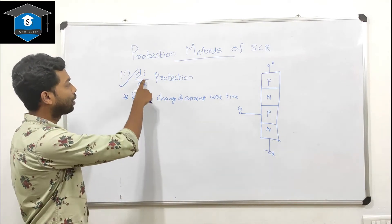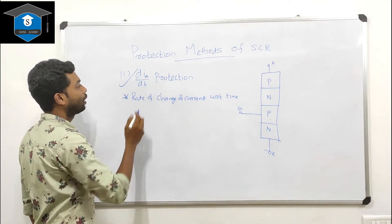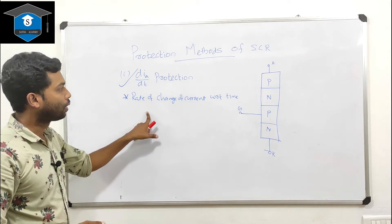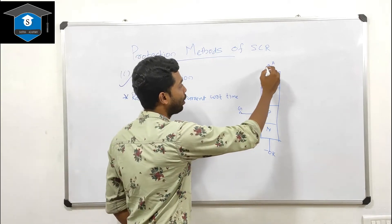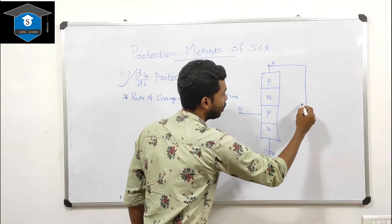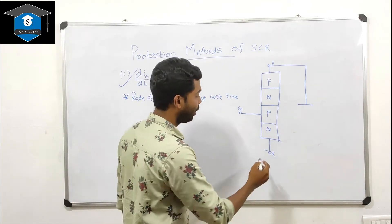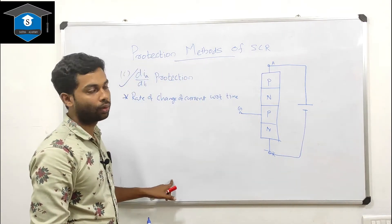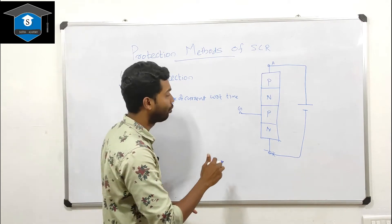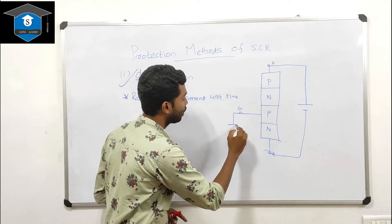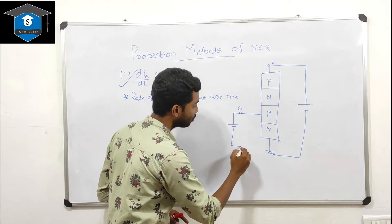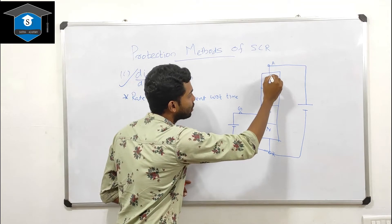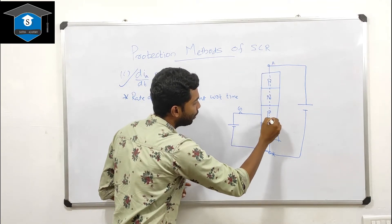In this case, the rate of change of anode current — the rate of change of anode current with respect to time. The anode terminal of the SCR is connected to the positive terminal of the battery and the cathode to the negative terminal. When forward biased, conduction starts when a gate voltage is applied. When charge carriers start spreading from the gate terminal...